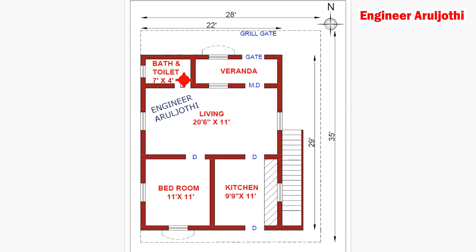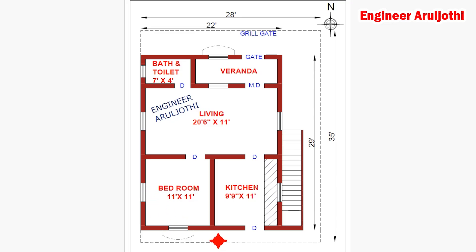The main door is 3.5ft x 7ft. This opening will be 3ft x 4ft. The kitchen opening is 3ft x 4ft. In the bedroom, the opening will be 3ft x 4ft size. The living hall opening is 3ft x 4ft size. Then the interior doors are as follows.